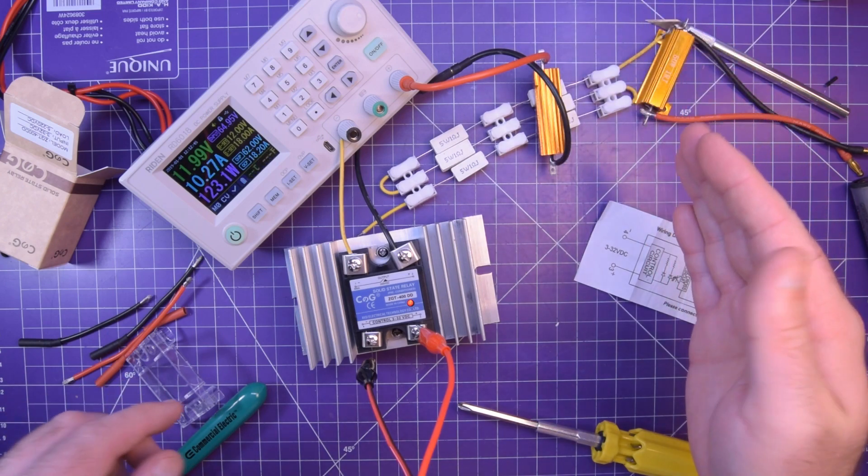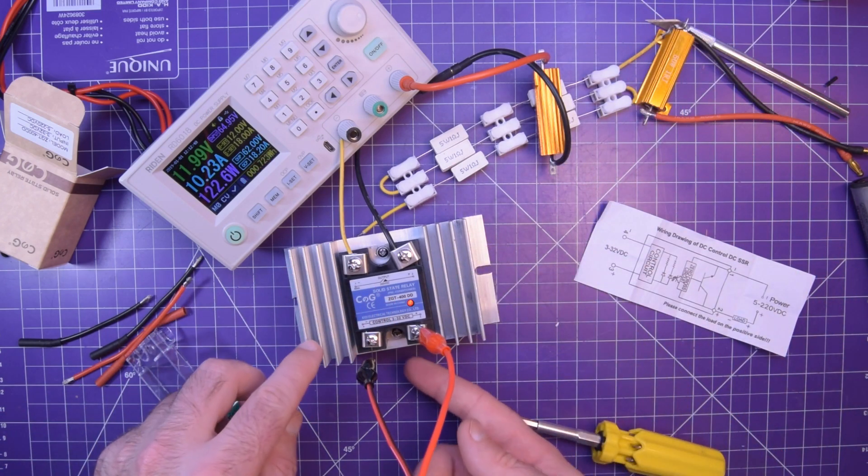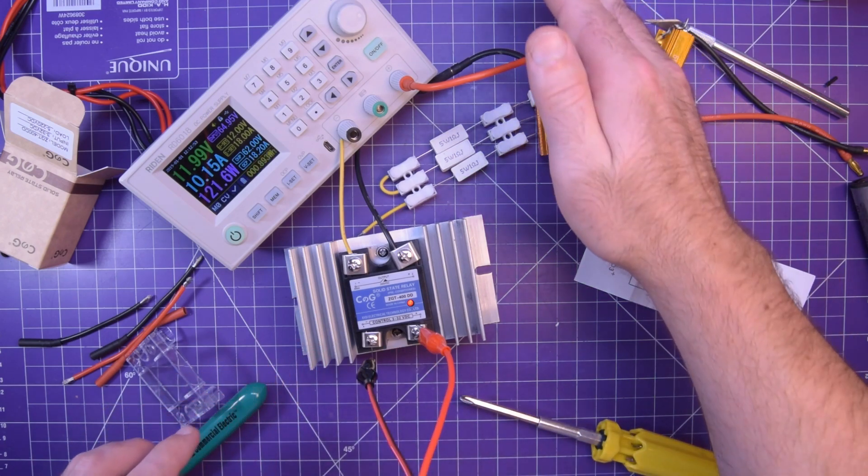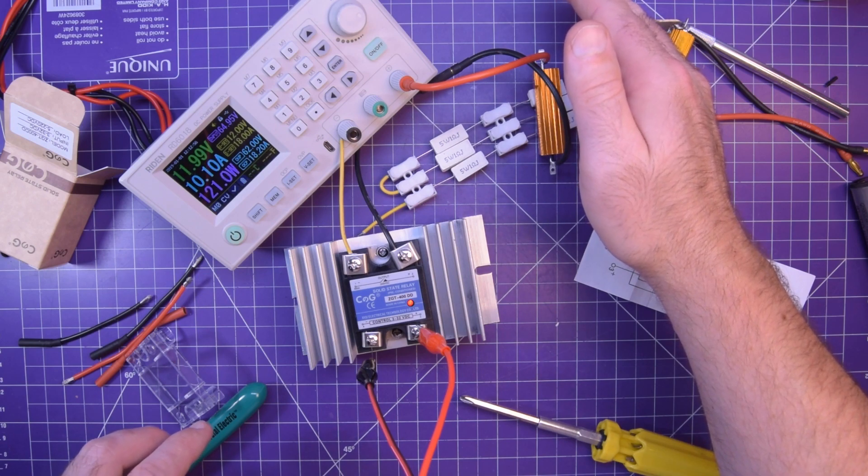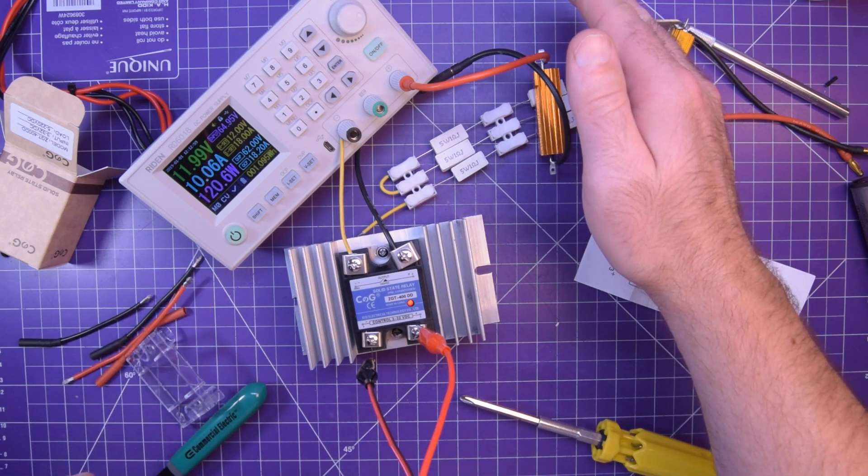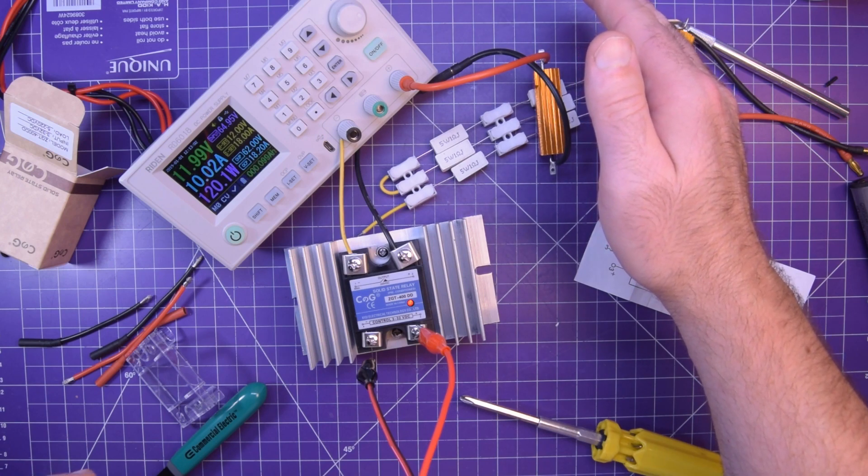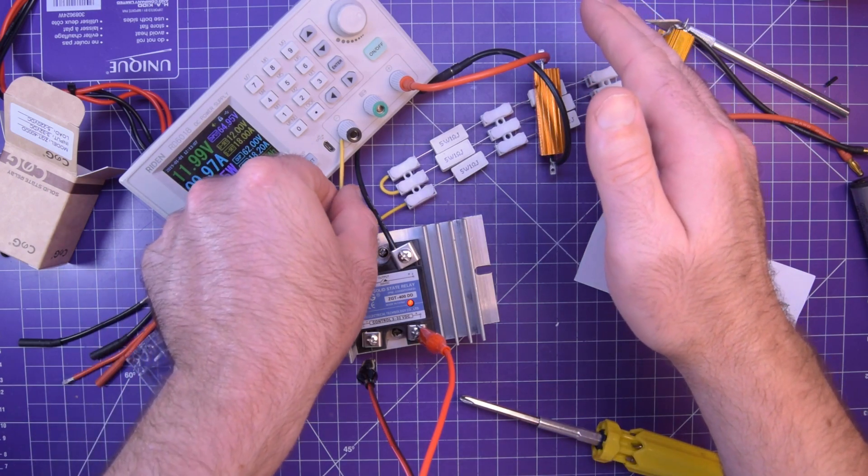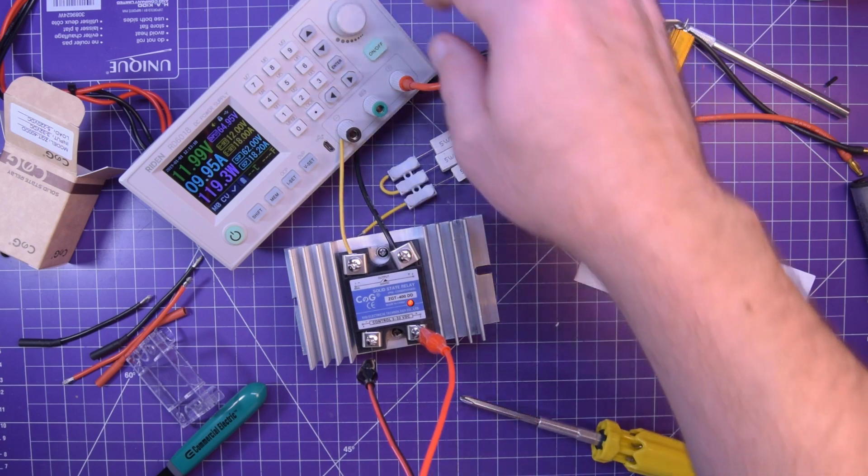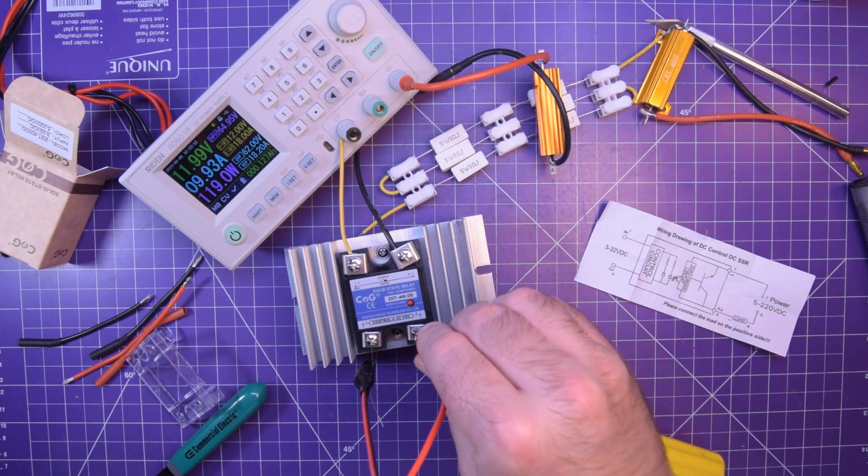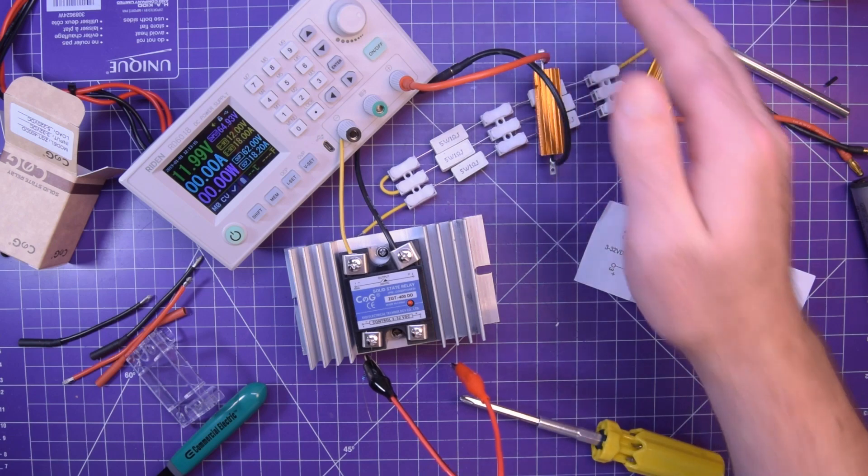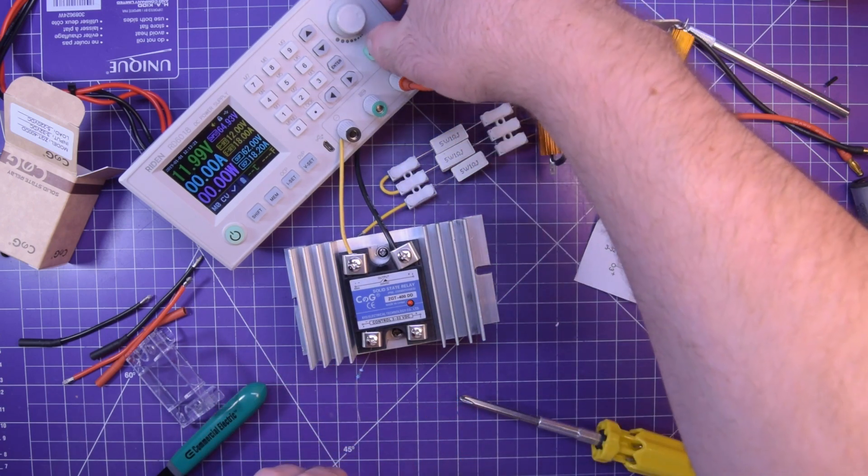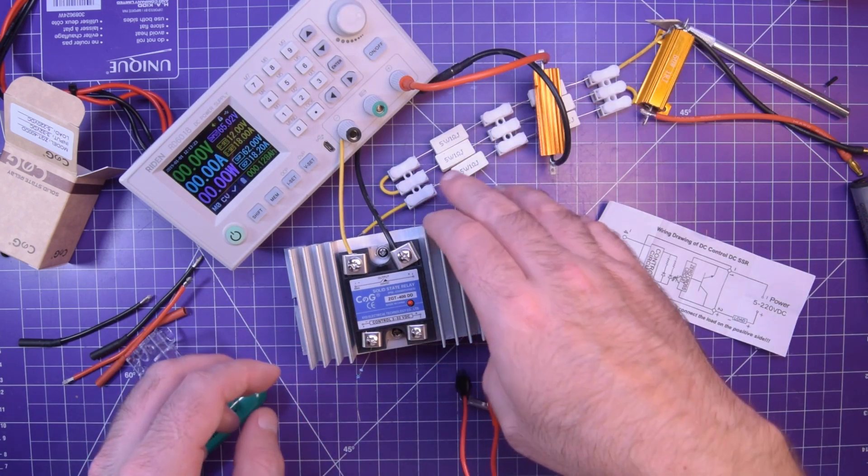And this resistor is pulling 123 watts. It's a 50 watt resistor. It's going to get real hot. But my goal is to see if the solid state relay gets particularly hot. Oh yeah. 120 watts. This is hot. This wire might be getting warm too. Nope. So far so good. Okay. We're going to cut it.